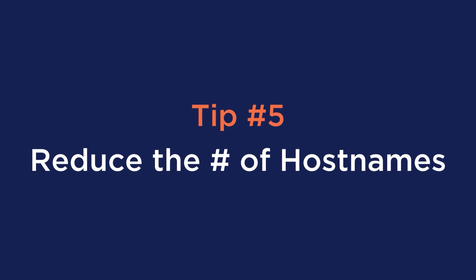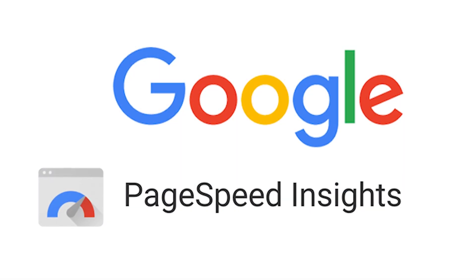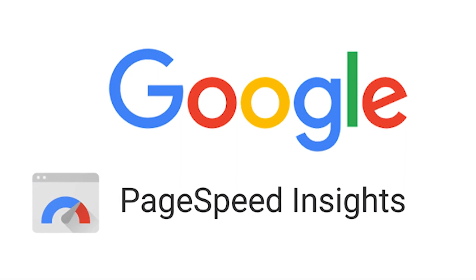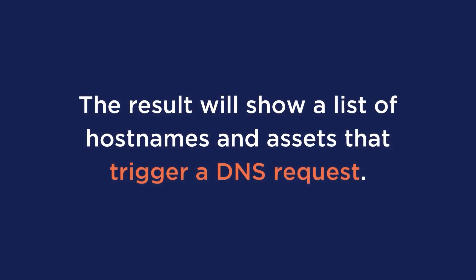Number five is to reduce the number of hostnames. Run your website through a speed test like Google PageSpeed Insights. The results will show a list of hostnames and assets that trigger a DNS request. For instance, external requests for graphics like social icon buttons each require a DNS lookup. While auditing, look out to see if these resources are essential to your website.